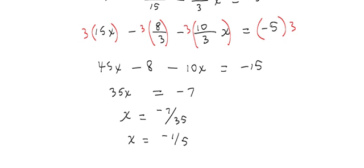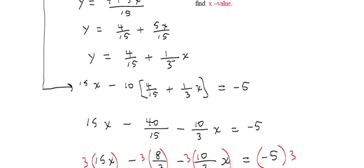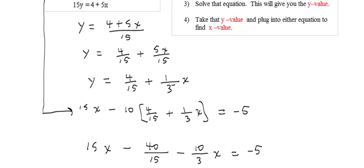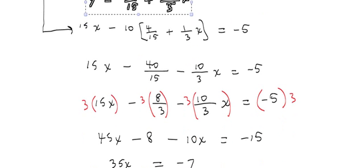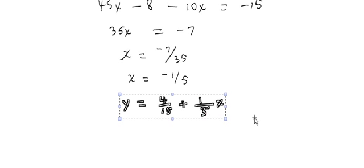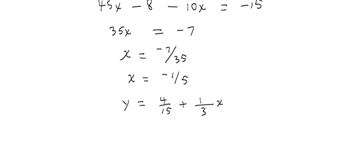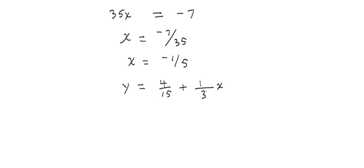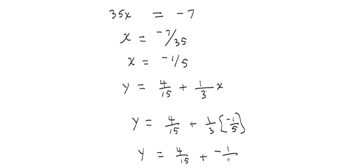Alright, we found what x is. Now we just need to figure out what y is. And to do that, let's go back up to some of the equations we had up here before. We have an expression for y right here. So let me copy that down below. We said that y was equal to 4 over 15 plus 1 third x. So, we know x is negative 1 fifth now. So, y is equal to 4 over 15 plus 1 over 3 times x. Well, x is negative 1 fifth.